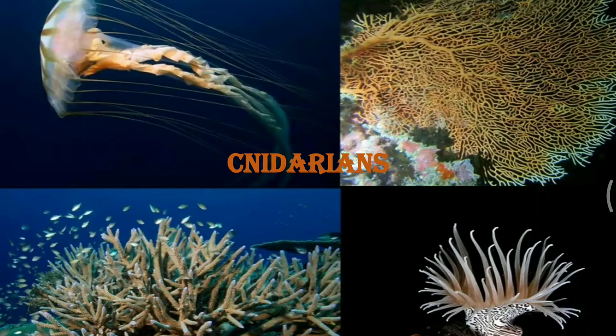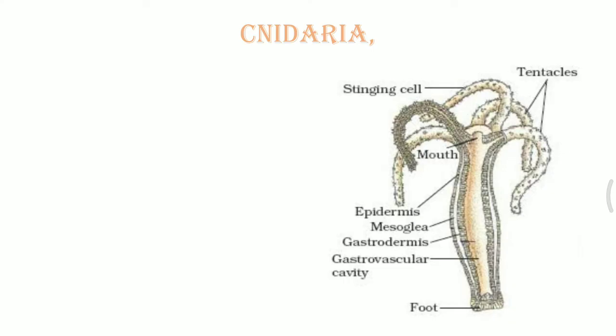Phylum Cnidaria is also known as Coelenterata. It includes the hydra, the sea corals, the jellyfishes, and sea anemones. Some of the characteristics of the cnidarians can be understood by looking at the structure of a hydra.